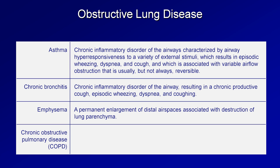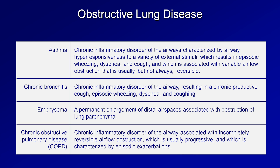You may note that while asthma and chronic bronchitis are defined largely based on symptoms, the definition of emphysema doesn't explicitly include symptoms. Finally, what is chronic obstructive pulmonary disease? COPD is a chronic inflammatory disorder of the airway associated with incompletely reversible airflow obstruction, which is usually progressive and characterized by episodic exacerbations. Those four definitions sound largely overlapping, which is partly why they are so tricky to distinguish in practice.